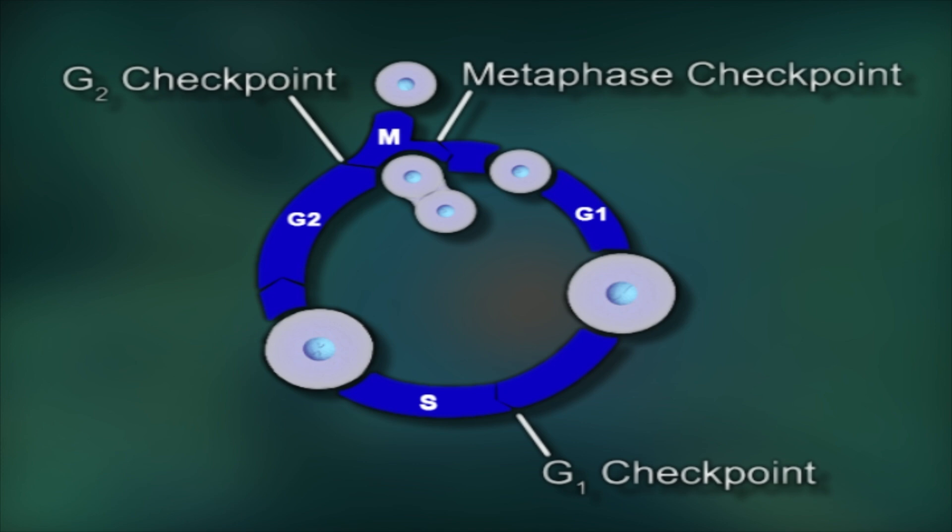A eukaryotic cell cycle is divided into three major phases: interphase, mitosis, and cytokinesis, the interphase being the longest.